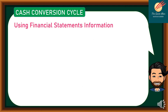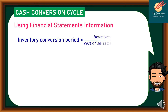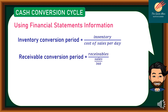We can also determine the cash conversion cycle using financial statement information. The formulas are: inventory conversion period equals inventory divided by cost of sales per day, and receivable conversion period equals receivables divided by sales, all over 360 days.